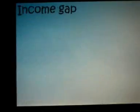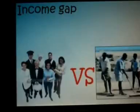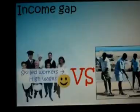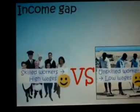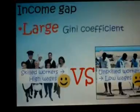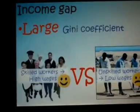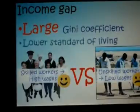How is the widening income gap explained? It is between the skilled and unskilled workers. The skilled have the necessary skills needed in a knowledge-based economy, so they receive higher wages which value-add their talent. Unskilled workers see slower wage growth as their skills become obsolete. Income inequality is measured by the Gini coefficient; in this case the value is large, implying a lower standard of living.